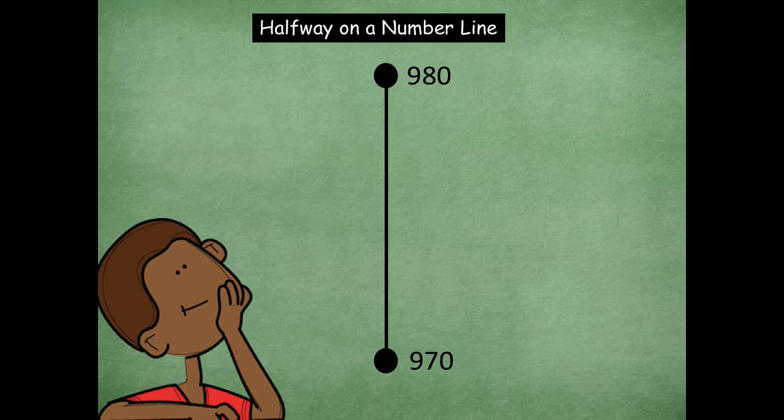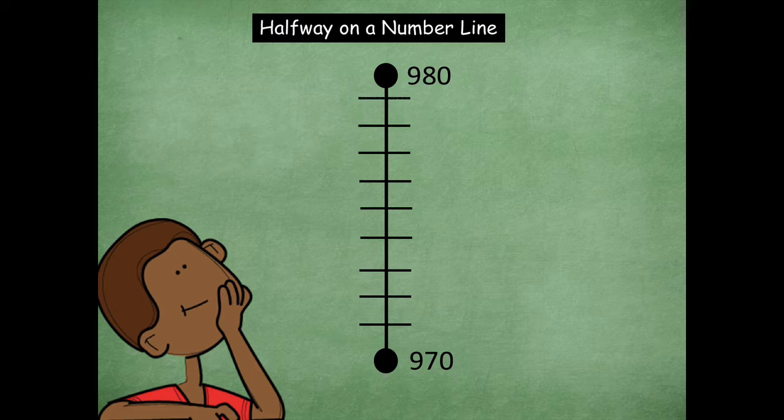So we have 970 and 980. So if I went 970, 971, 72, 73, 74, 75, 76, 77, 78, 79, 80. Okay. So 970 and 980. Remember four on the top, four on the bottom. You want that middle. That's going to be your halfway or midpoint. And what is it friends? Yeah. 975. Awesome.